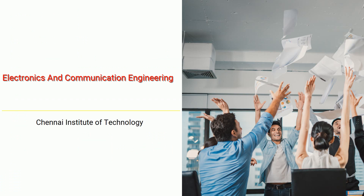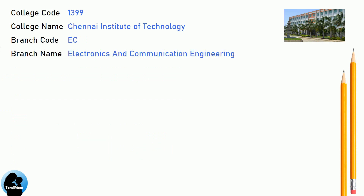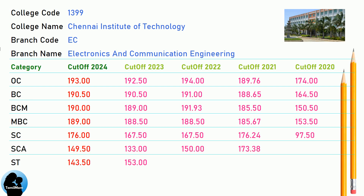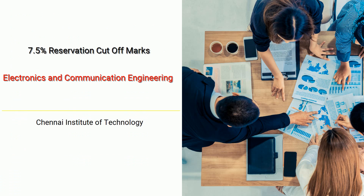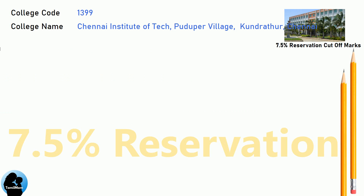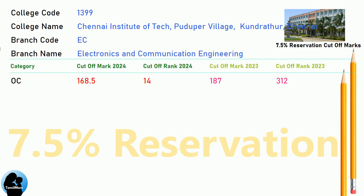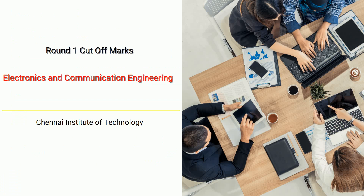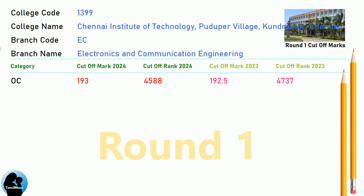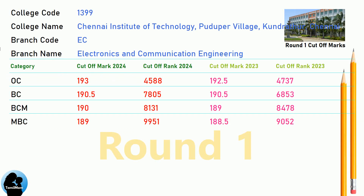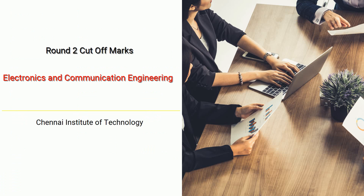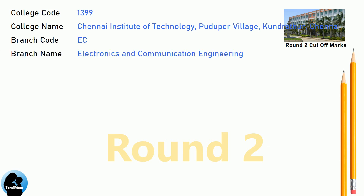DNA Cut-off for Chennai Institute of Technology in Electronics and Communication Engineering. DNA 7.5 Reservation Cut-off for Chennai Institute of Technology in Electronics and Communication Engineering. DNA Round 1 Cut-off and Round 2 Cut-off for Chennai Institute of Technology in Electronics and Communication Engineering.